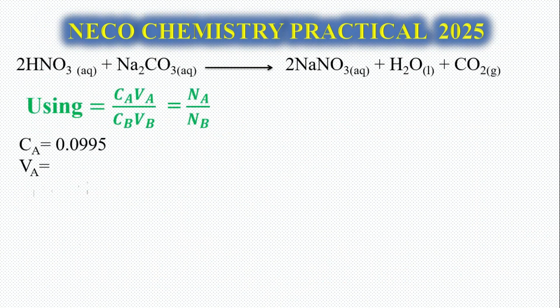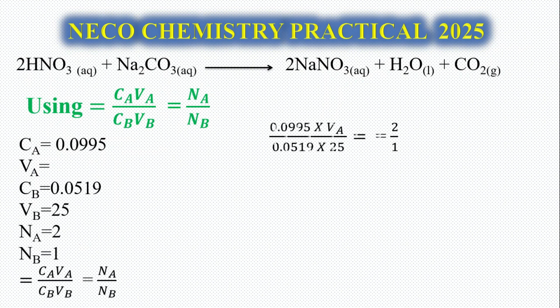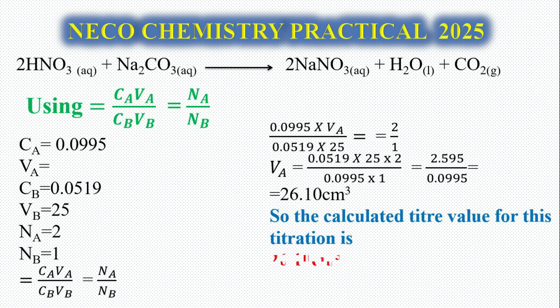Let's look at our balanced chemical equation. The reaction is between HNO3 and Na2CO3, giving us 2NaNO3 plus H2O plus CO2 gas. So we have 2 ratio 1, 2 ratio 1 of the acid to base in the reaction.